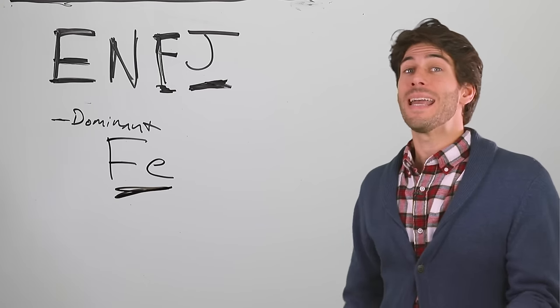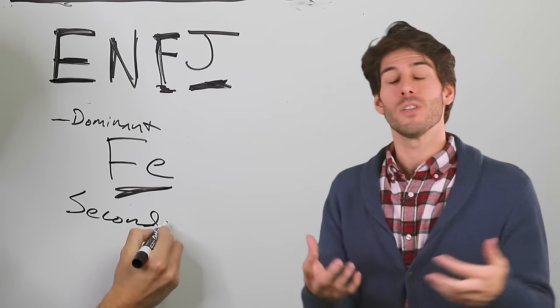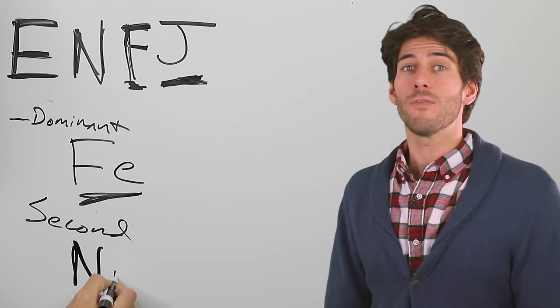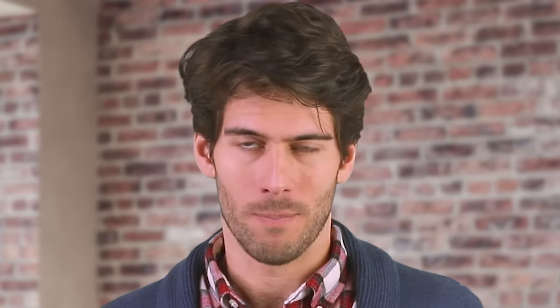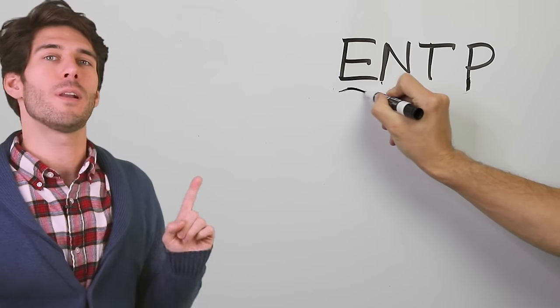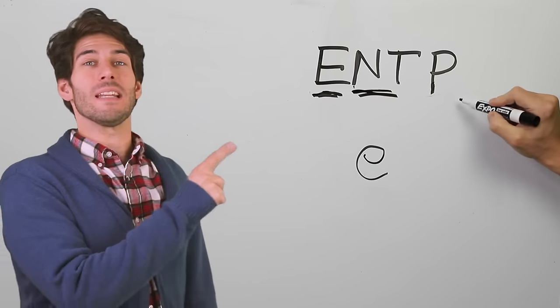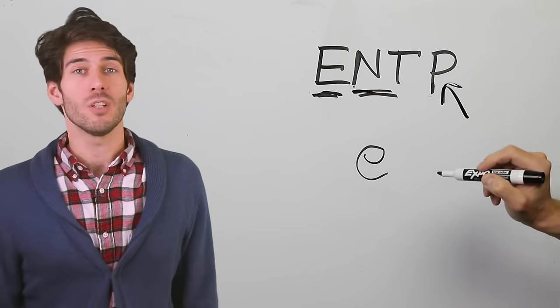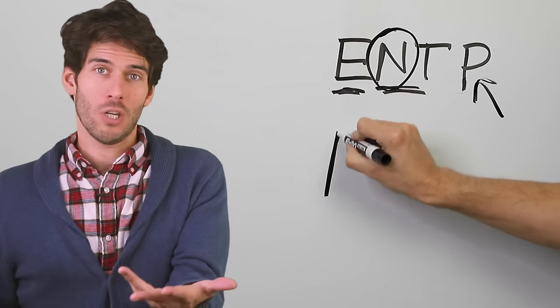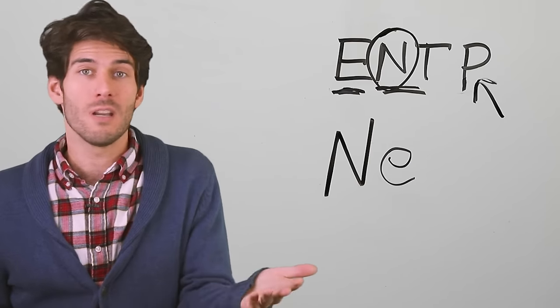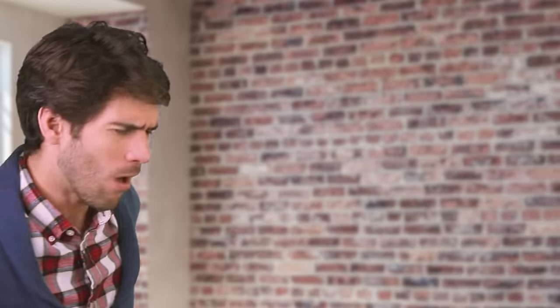So an ENFJ's second function must be intuition, and since it has to be the opposite attitude of the dominant function, it's introverted — NI, introverted intuition. Now let's look at an ENTP. The dominant function is extroverted. We look at the last letter — P — so the first extroverted function is a perceiving function, which is intuition. It's an extroverted type, so the dominant function is extroverted intuition, NE.